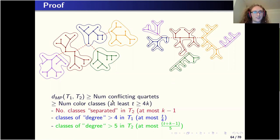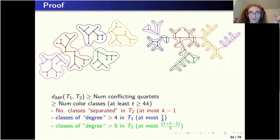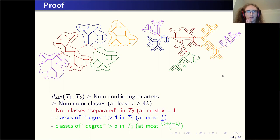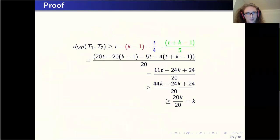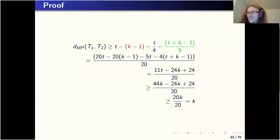The final ingredient is that for any D, at most T over D of these classes can have degree greater than D in T1 or T2 — essentially the observation that in any unrooted tree, at most half the vertices have degree greater than two, which extends to larger degrees and to how these classes join in a tree-like structure. So counting: we start with T classes (at least 4K), subtract at most K minus one that get separated in T2, subtract at most T over four with degree greater than four in T1, and subtract at most T plus K minus one over five with degree greater than five in T2. The arithmetic balances to give at least K classes with conflicting quartets, which is exactly what we need.